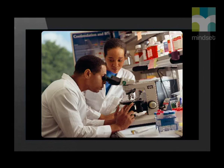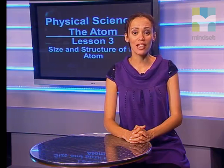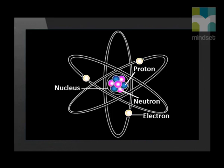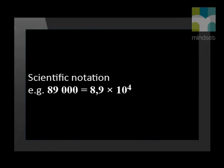Atoms are extremely small submicroscopic particles. This means that they are so small we can't even view them under a microscope. What we will cover today is based on the Rutherford atomic model. We will try and get a rough estimate of the mass and diameter of an atom. Because the mass and diameter of atoms are so small, we have to use scientific notation when writing down atomic mass or atomic radius.